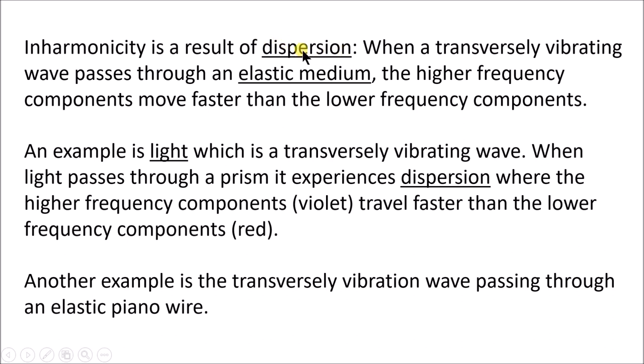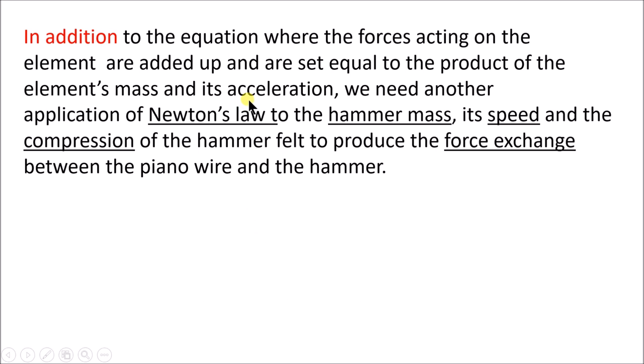A few comments about inharmonicity, which was the topic of that second paragraph. It's a result of dispersion, which happens when a transversely vibrating wave passes through an elastic medium. The higher frequency components move faster than the lower frequency components. An example is light, which is a transversely vibrating wave. When light passes through a prism, which is elastic, it experiences dispersion where the higher frequency components like violet waves travel faster than the lower frequency components, the red waves. Another example is a transversely vibrating wave passing through elastic piano wire.